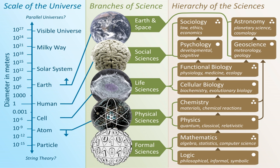Over the last two millennia, physics was a part of natural philosophy along with chemistry, certain branches of mathematics, and biology, but during the scientific revolution in the 16th century, the natural sciences emerged as unique research programs in their own right. Certain research areas are interdisciplinary, such as biophysics and quantum chemistry, which means that the boundaries of physics are not rigidly defined. In the 19th and 20th centuries, physicalism emerged as a major unifying feature of the philosophy of science as physics provides fundamental explanations for every observed natural phenomenon. New ideas in physics often explain the fundamental mechanisms of other sciences, while opening to new research areas in mathematics and philosophy.